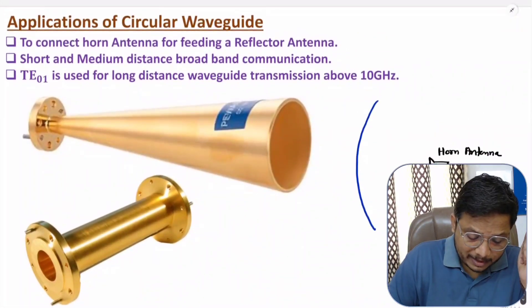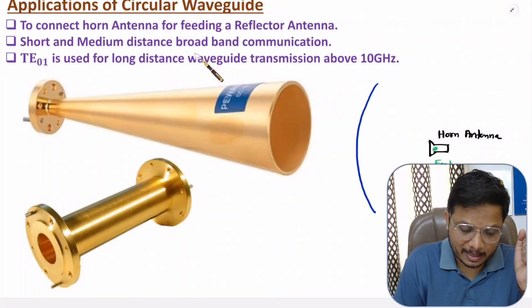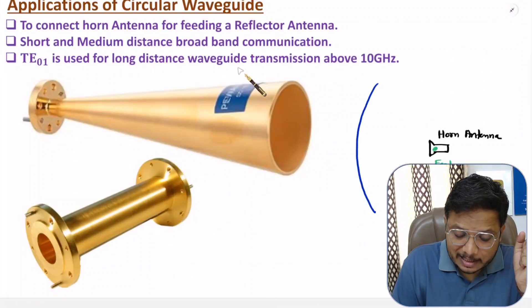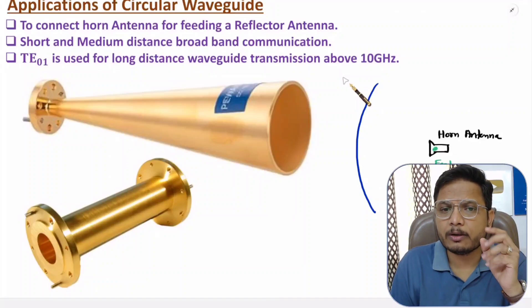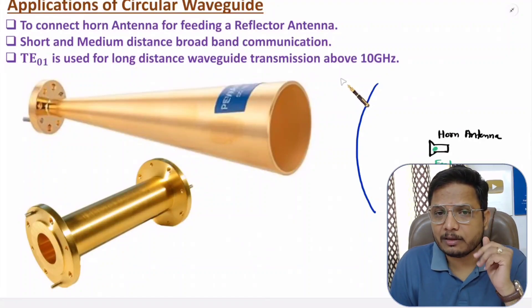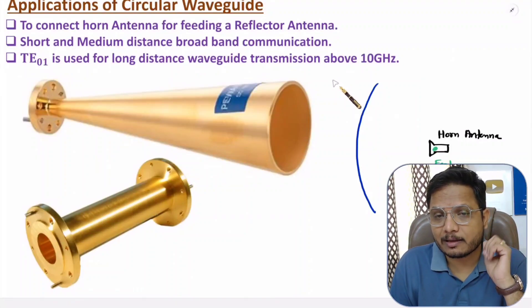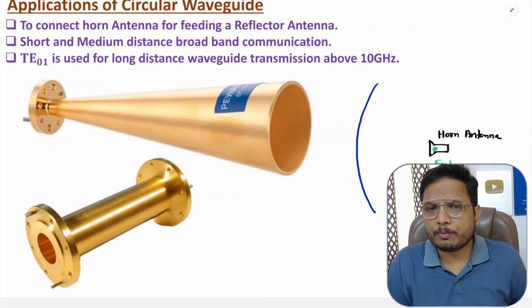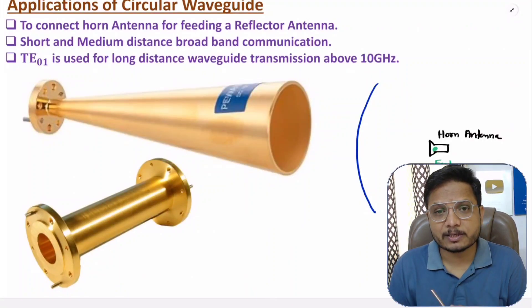Circular waveguide can also be used for short and medium distance broadband communication. TE01 mode is used for long-distance transmission above 10 GHz, because in circular waveguide the TE01 mode has minimum attenuation, allowing long-distance transmission. I hope you enjoyed this session — please note any questions in the comment section. Thank you so much for watching.